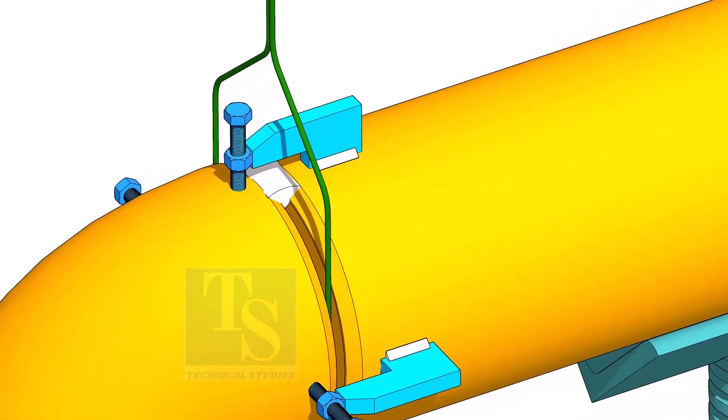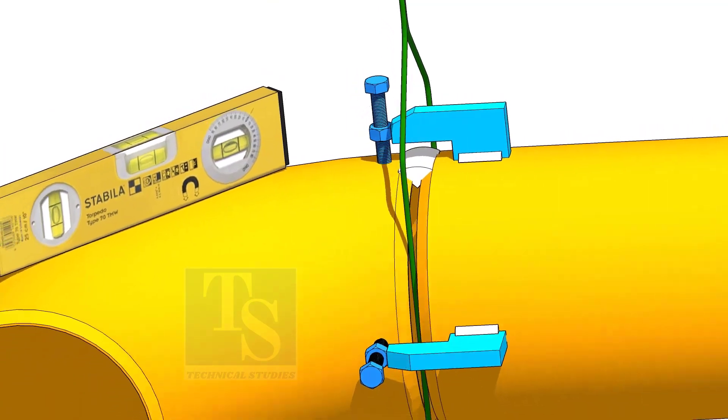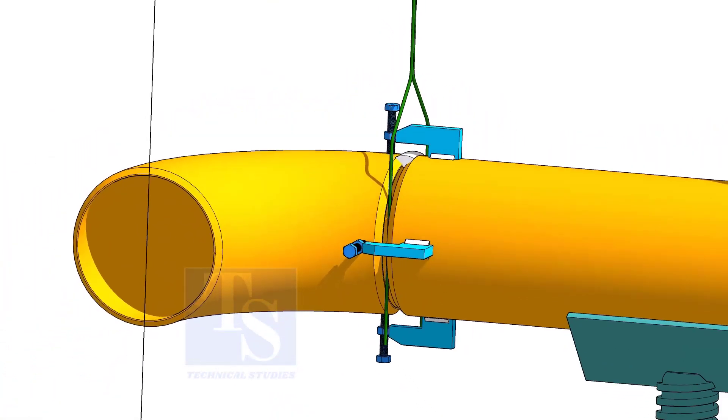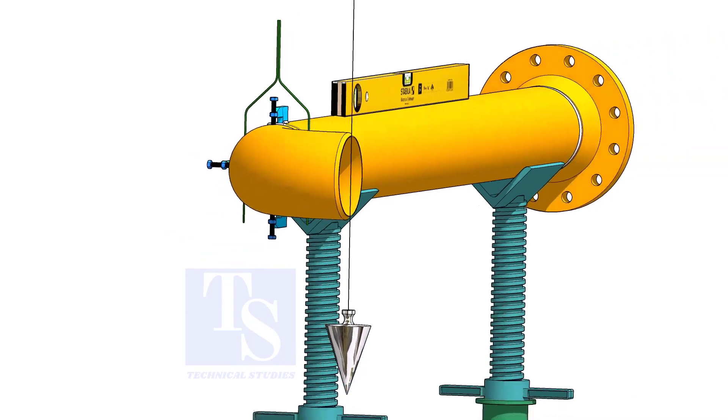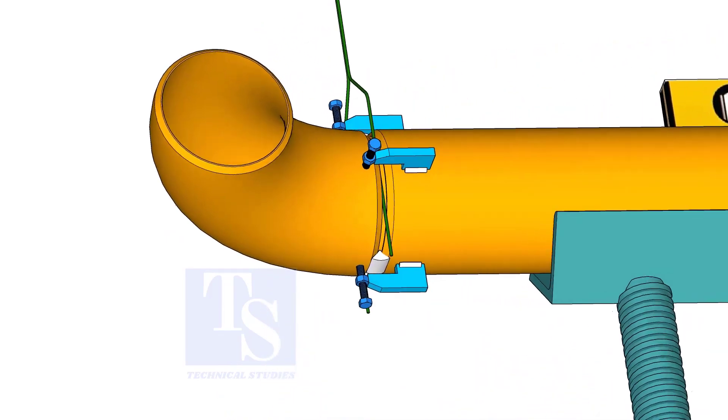Tack weld on the top of the joint. Check the top level of the elbow. Tack weld in the bottom side of the joint.